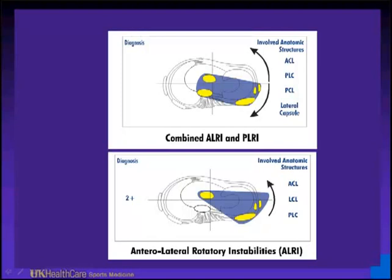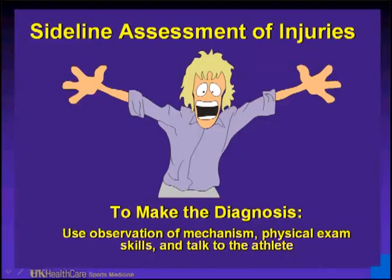This was a combined anterolateral and posterolateral instability. The involved structures were ACL and posterolateral corner — PCL was not involved. Think about what you're doing with the exam, correlating it with the mechanism of injury and the involved structures that are torn. For sideline assessment of injuries, to make the diagnosis you must use observation of the mechanism or talk to somebody who witnessed the injury. Physical exam, talking to the athlete about what hurt and how it occurred. If they have no pain, be concerned it is a more severe injury. Make sure you do a neurovascular check in all cases, as well as a thorough ligamentous exam. You can make the diagnosis based on history and physical exam acutely.